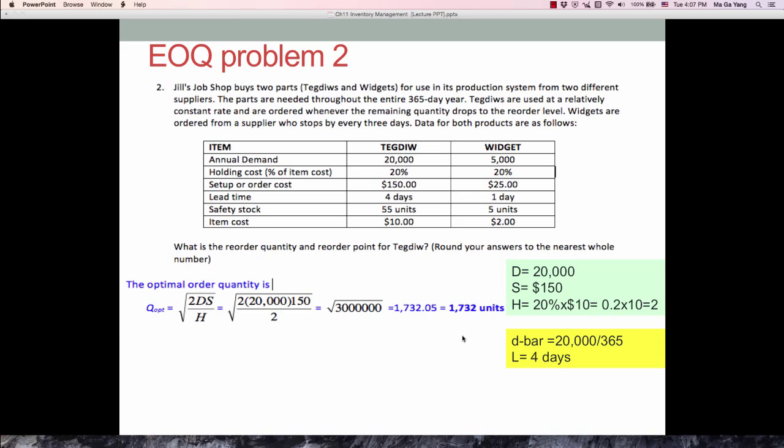And then in terms of reorder point, we have to know the D bar which is the daily demand and lead time in days. Since annual demand is 20,000 divided by 365 days, that is your daily demand. And lead time is 4 days. So our reorder point equals 20,000 divided by 365 times 4, which is 219.18. So we round down, so our answer is 219 units.